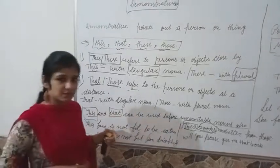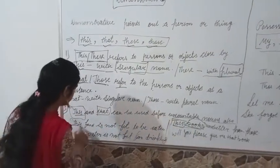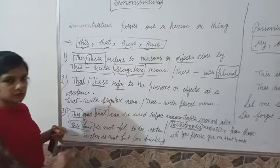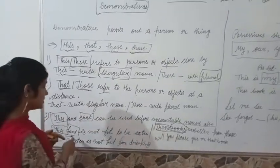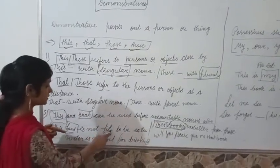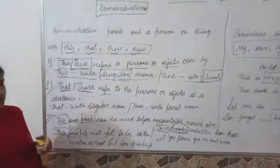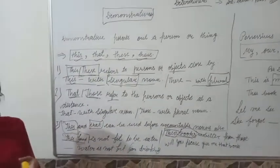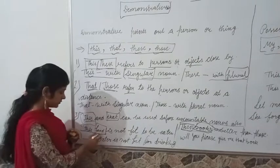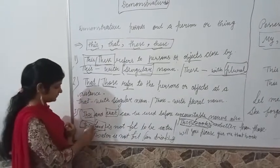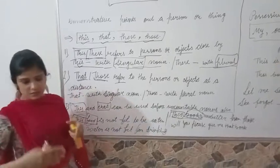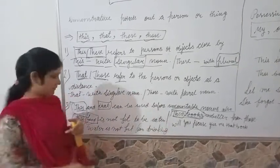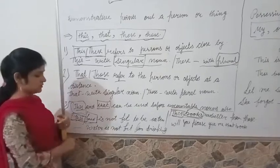Let me give you some examples. 'This food' — can we count it? No, we cannot count food. 'This food is not fit to be eaten.' So, can we count the food? No. Before it, which demonstrative should be used? 'This' demonstrative should be used, because the food is close.